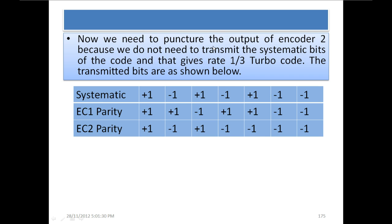We need to puncture the output of encoder 2 because we do not need to transmit the systematic bits from both outputs. There is a de-interleaver at the decoder which can recover the same sequence. What we transmit are the systematic bits from the non-interleaved output — plus 1, minus 1, plus 1, minus 1, plus 1, minus 1, minus 1, minus 1 — and the parity bits produced by each encoder. At the decoder, we will de-interleave accordingly.